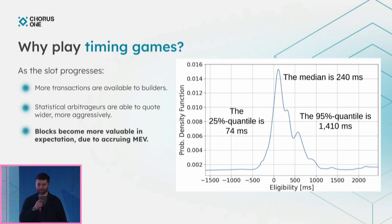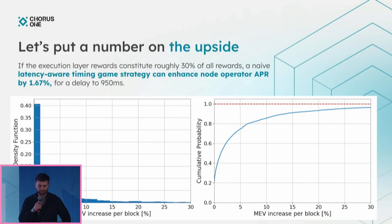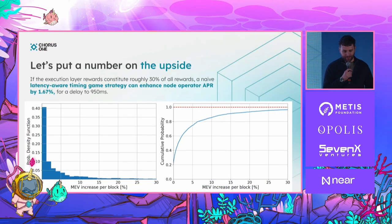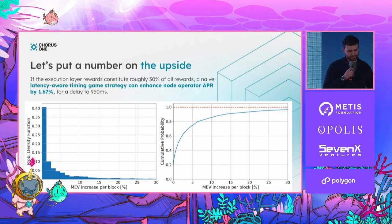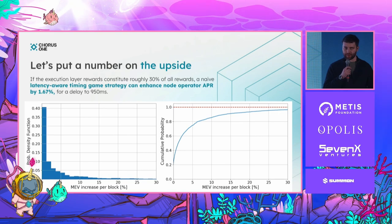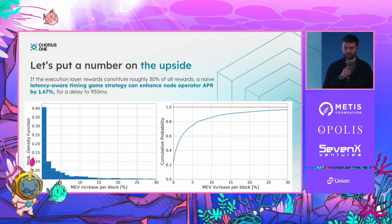What that means is that blocks become more valuable in expectation due to transactions and MEV accruing at the builders. The graph on the right shows when validators usually select the next block. To put a number on the upside: if a validator delays bid selection to 950 milliseconds in the slot, and execution layer rewards are approximately 30% of all rewards, that means an APR upside of 1.67% in expectation — which is quite significant and would incentivize people to do this.